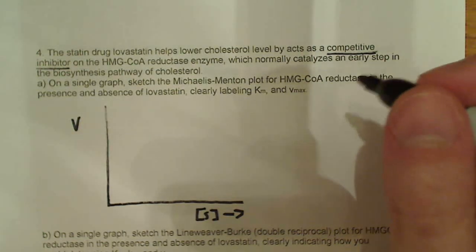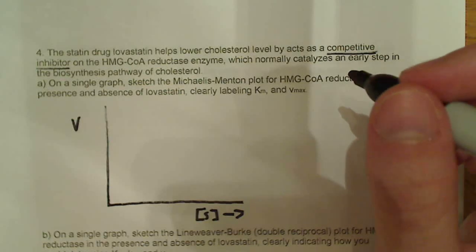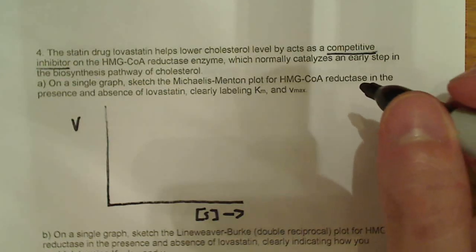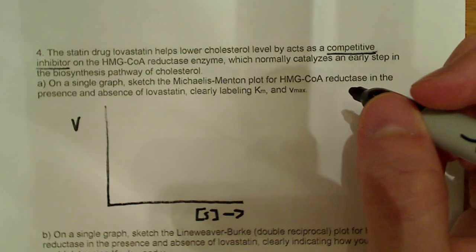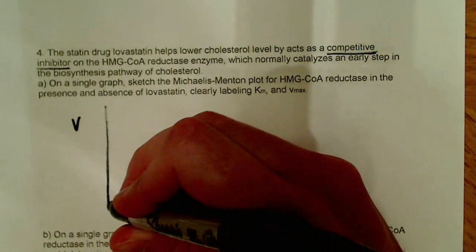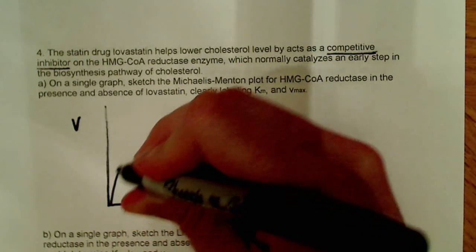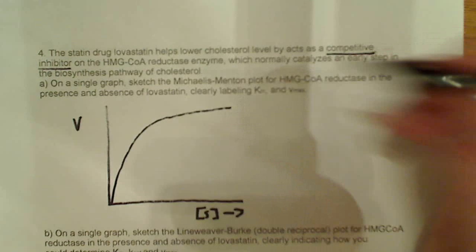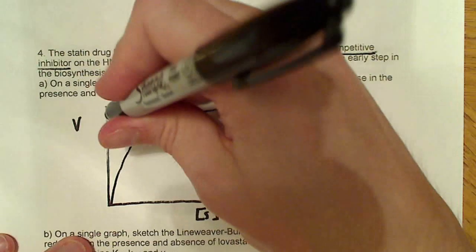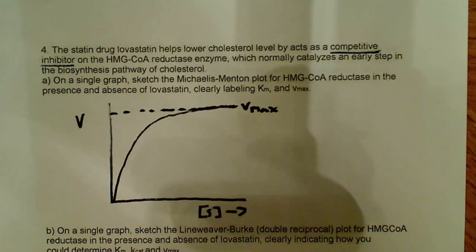Now, if this enzyme, HMG-CoA reductase, is working the way it should be working, then what we know about it is it's going to have this hyperbolic shape to it. So, something like that, and we know that this point up here, if I had to label it, up here, this is going to be our Vmax. That's going to be our Vmax.